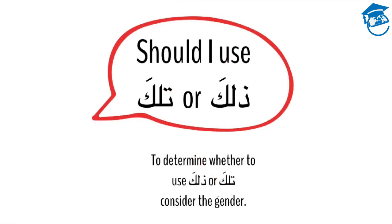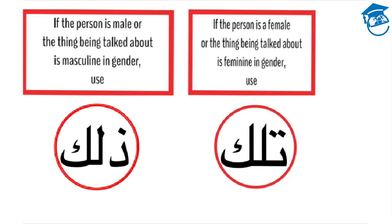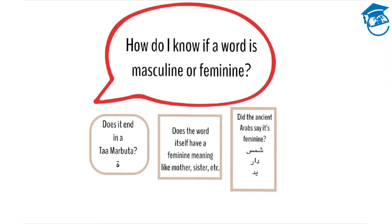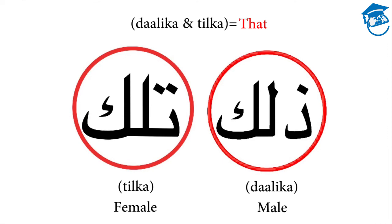If you are confused as to whether you need to use dalika or tilka, consider the gender. If the person being talked about is a male, or the thing being talked about is masculine in gender, we use dalika. If the person being talked about is a female, or the thing being talked about is feminine in gender, we use tilka. Remember from part one, to decide if a word is masculine or feminine, we look at three things: first, does it end in tamar buta? Second, does the word itself have a feminine meaning? Or third, did the ancient Arabs say that it's feminine? Both dalika and tilka mean that, but dalika is used for males and masculine things, and tilka is used for females and feminine things.